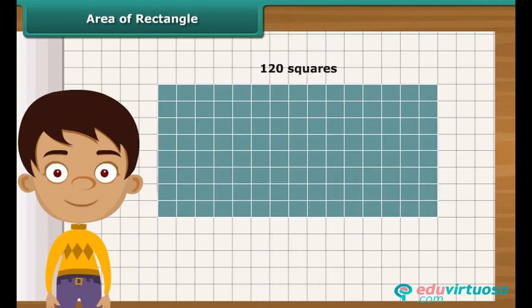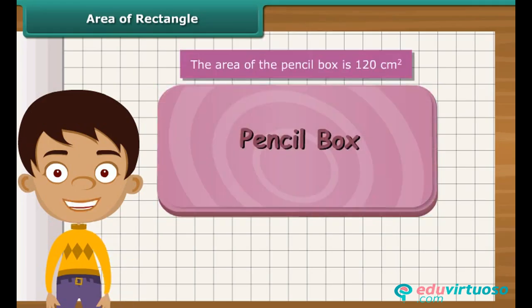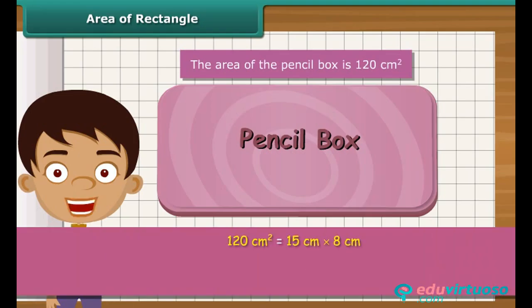Altogether, 120 squares have been arranged on the squared paper. It means the area of the pencil box is 120 square centimeters, which is 15 centimeters multiplied by 8 centimeters.